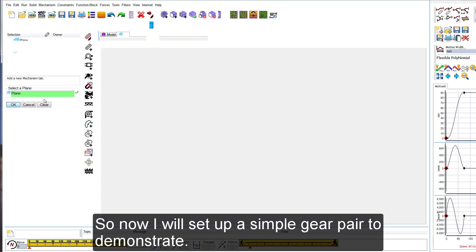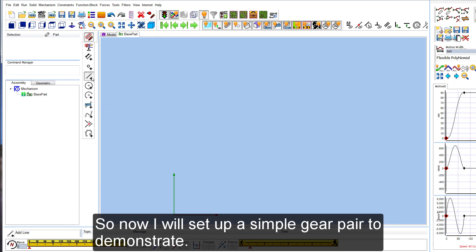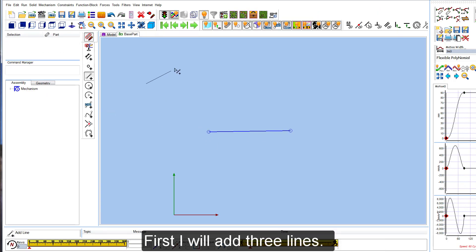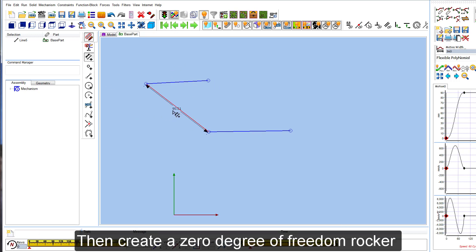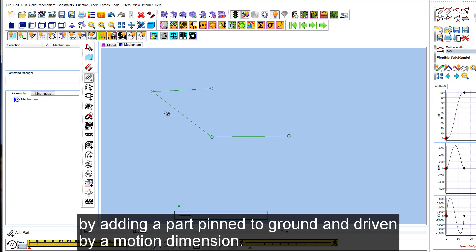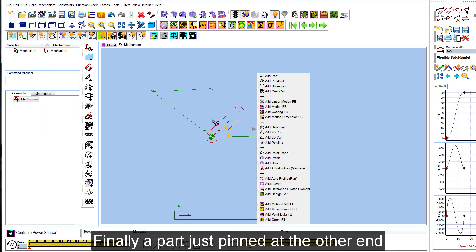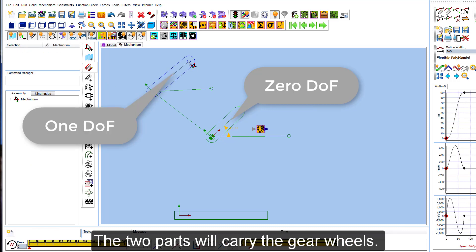So now I will set up a simple gear pair to demonstrate. First I will add three lines. The linking line is the one we need to dimension. Then create a zero degree of freedom rocker by adding a part pinned to ground and driven by a motion dimension, and finally a part just pinned at the other end. These two parts will carry the gear wheels.